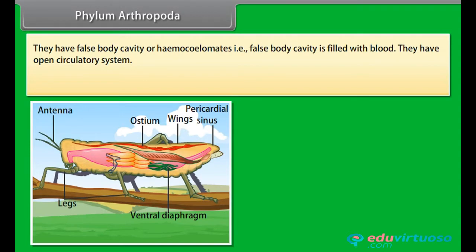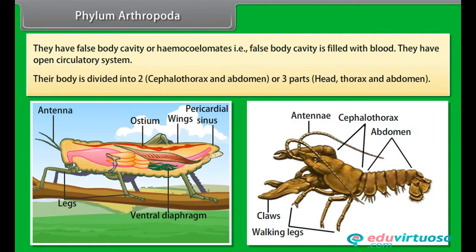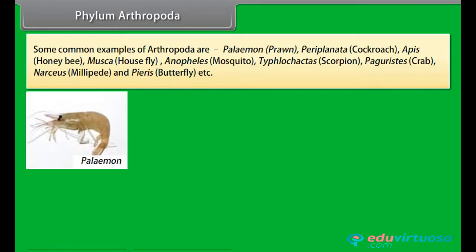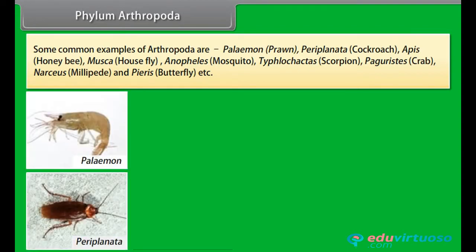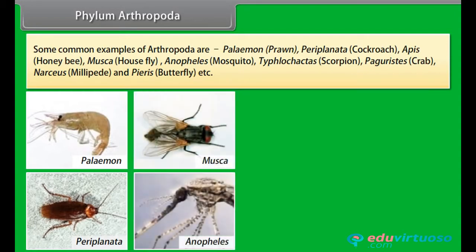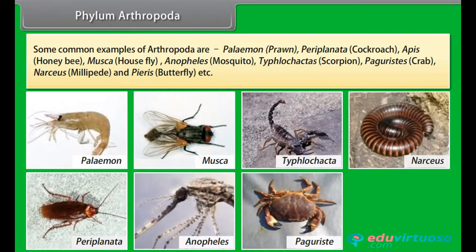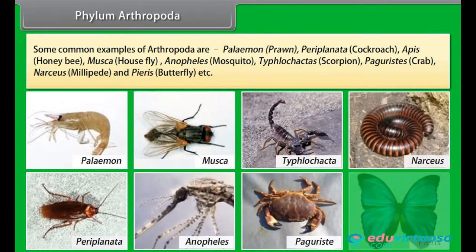They have an open circulatory system. Their body is divided into two parts — cephalothorax and abdomen — or three parts: head, thorax, and abdomen. Arthropoda form the largest group of animals; about 9 lakh species of Arthropoda are known till date. They are aquatic or terrestrial. Some common examples are Palaemon, prawn, Periplaneta, cockroach, Apis, honeybee, Musca, housefly, Anopheles, mosquito, Buthus, scorpion, Cancer, crab, Narceus, millipede, and Pieris, butterfly.